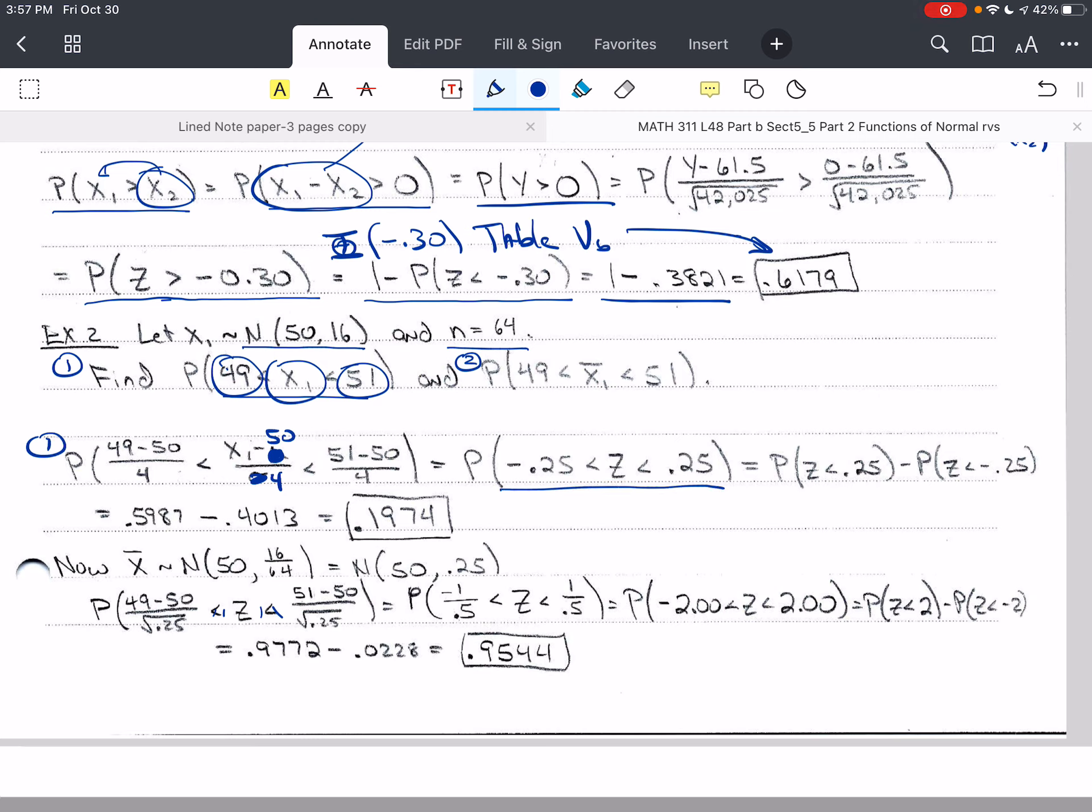And we end up with the probability that z is between negative 0.25 and positive 0.25. And so that is the probability z is less than positive 0.25 minus the probability z is less than negative 0.25. And we can look up both of these from our table, table 5a here and 5b here. And this is the answer, 0.1974.